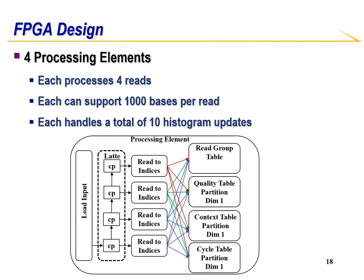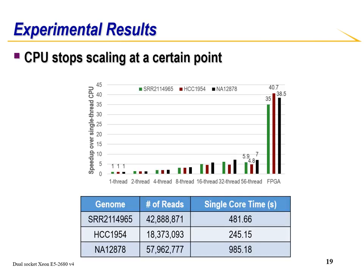After applying all these methods, this is our FPGA design. There are a total of four processing elements, each handling four reads for load balancing reasons. Within each processing element, there are 10 parallel histogram updates. The quality, context, and cycle tables are partitioned along the first dimension, allowing for parallel histogram updates. Our design shows promising results when compared to the CPU — a dual-socket Xeon E5 revision 4 using the Apache Spark framework, which stops scaling after 16 threads. Our design achieves 4.8x speedup compared to 56 threads and 35x speedup compared to single thread. Note that the genomes are subsampled to allow a single core to finish in a reasonable amount of time.